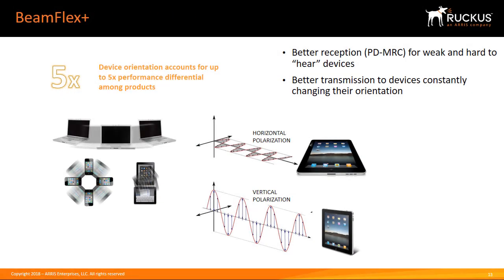BeamFlex Plus is the receive function of the BeamFlex antenna. Whereas BeamFlex provides the transmissions made by a Ruckus access point, BeamFlex Plus refers to the improved reception of signals transmitted by wireless clients. The BeamFlex antenna array is designed to minimize the amount of internal electronic noise. This reduction, combined with the increasing sensitivity of the BeamFlex antenna, means clients are able to transmit at higher data rates, making the wireless LAN operate more efficiently.